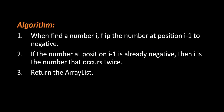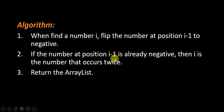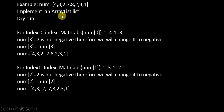Now we will optimize our time complexity without using sort function. The algorithm: when we find the number i, we flip the number at position i-1 to negative. If the number at position i-1 is already negative, then i is the number that occurred twice. Finally we return our array list.